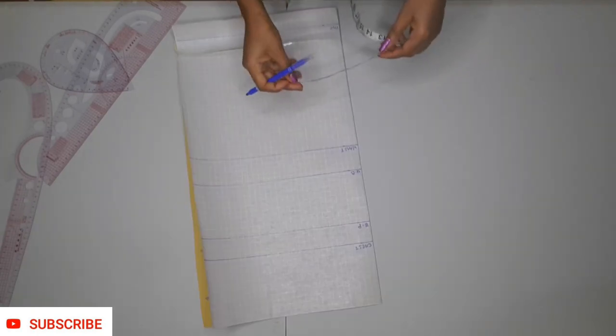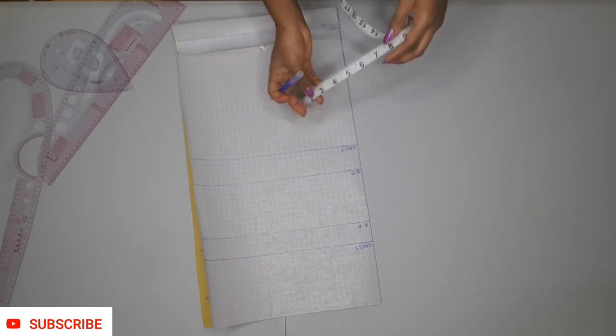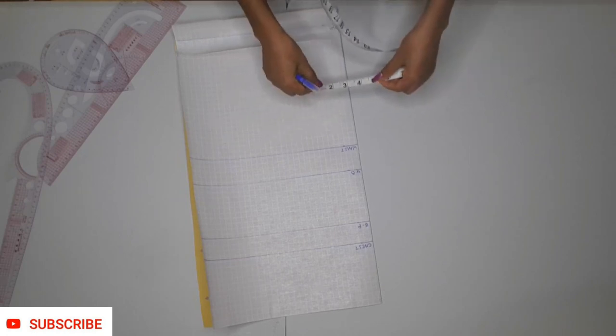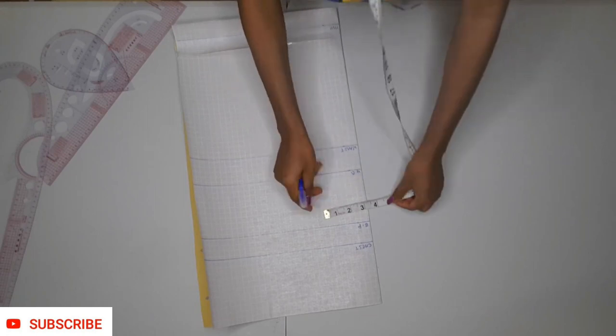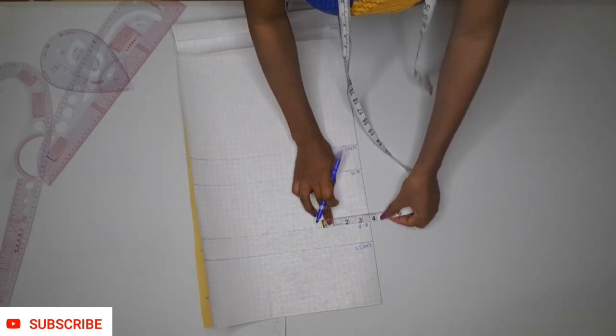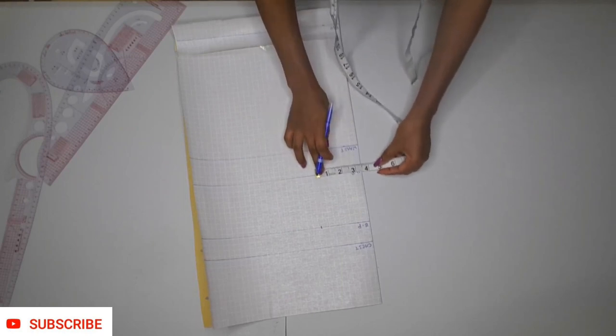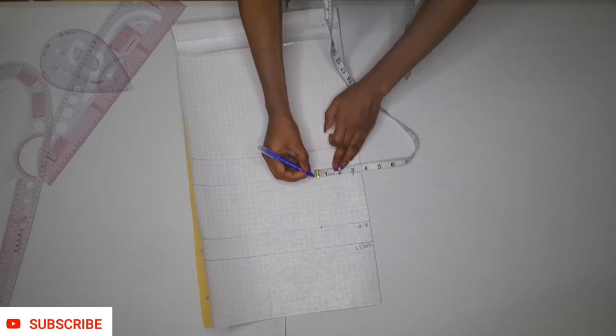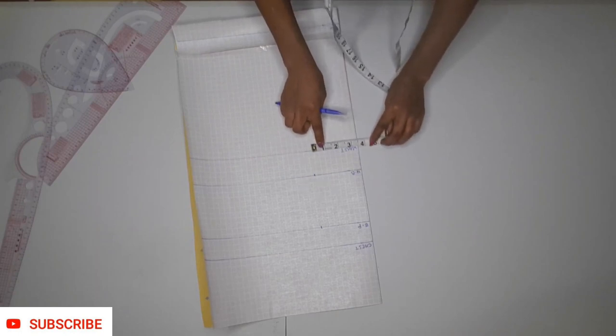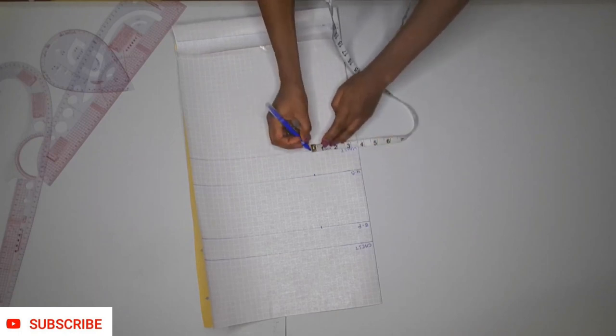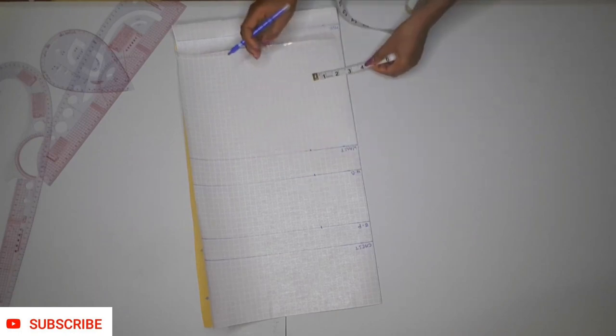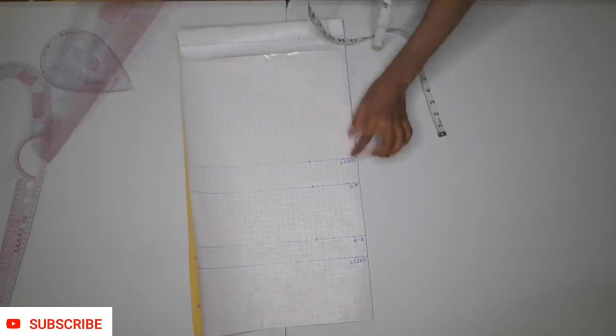I'm going to be transferring the half of my bust point. Take your nipple to nipple measurement, divide it by 2, and transfer it right here. Mine is 3.5 and I'm marking it. Mark it on those horizontal lines and then connect that with a straight line.